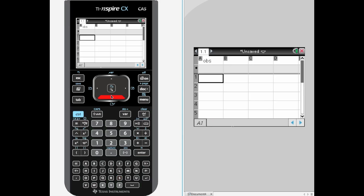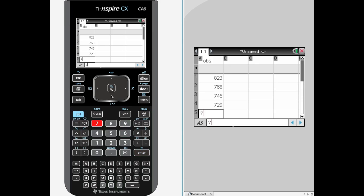And we are going to enter the values of 823, 768, 746, 729, 794, 837, and 877. We will arrow over, go up to the top of the next column.